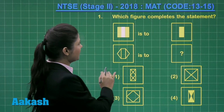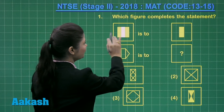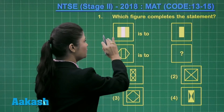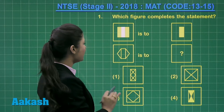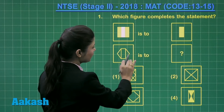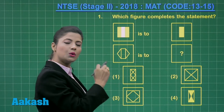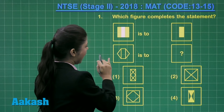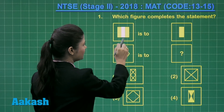The question states: which figure completes the statement? You have this diagram is to this diagram, where you have to decode the relationship in the first diagram, and then this diagram is to this missing figure. Let's decode the relationship in the first given figures and try to obtain the answer.